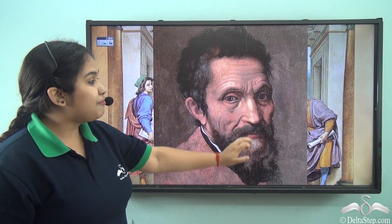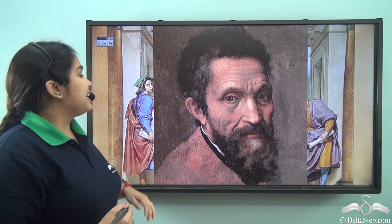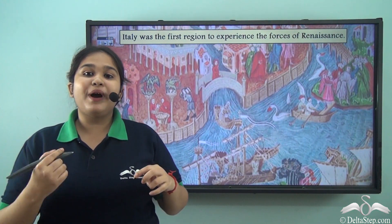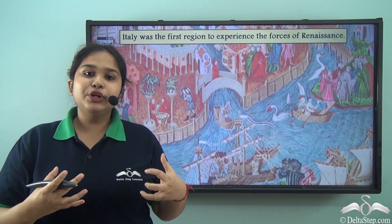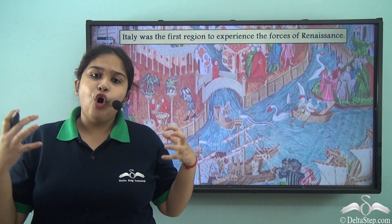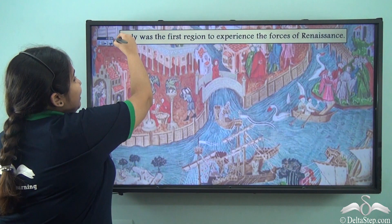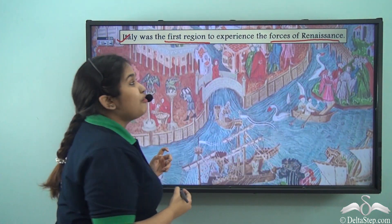For example, we see the picture of Michelangelo here. Michelangelo and Lorenzo de Medici were very close friends — Michelangelo stayed there for five years and they dined at the same table. This animation makes it quite visible how the wealthy Medici family was able to patronize these forms of Renaissance ideas, and thus Italy became the first region to experience the forces of Renaissance.